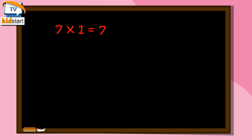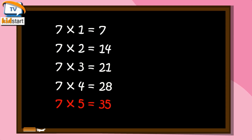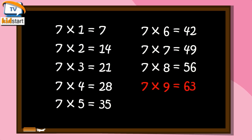7 ones are 7, 7 ones are 7. 7 twos are 14, 7 twos are 14. 7 threes are 21, 7 threes are 21. 7 fours are 28, 7 fours are 28. 7 fives are 35, 7 fives are 35. 7 sixes are 42, 7 sixes are 42. 7 sevens are 49. 7 eights are 56. 7 nines are 63. 7 tens are 70.